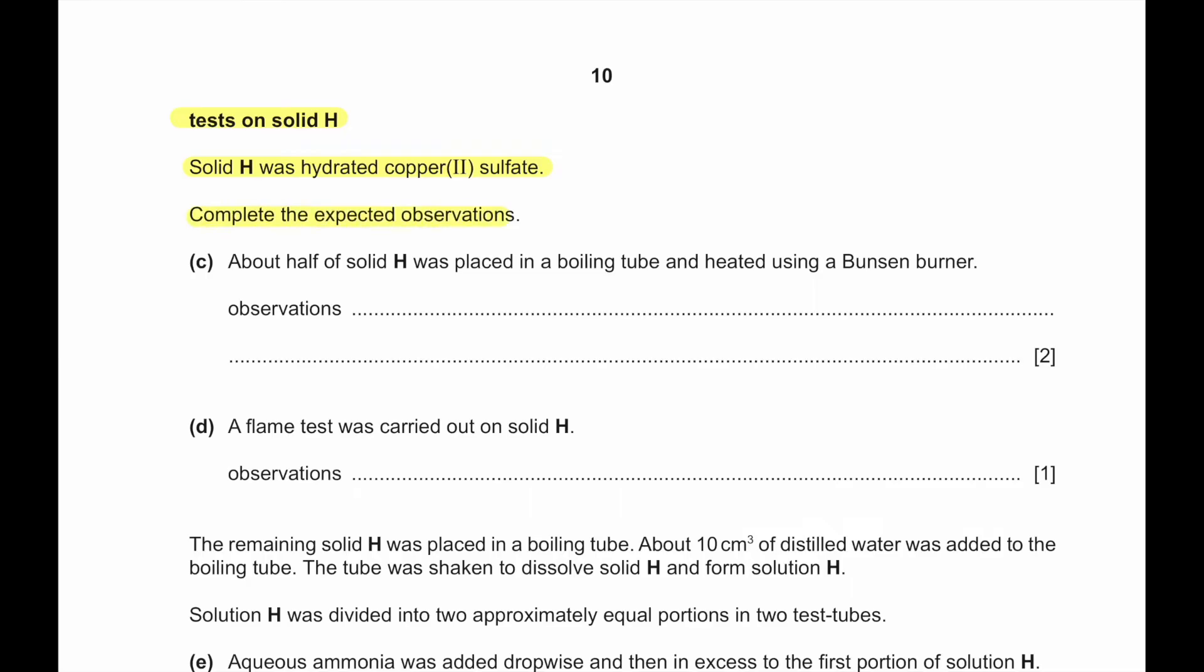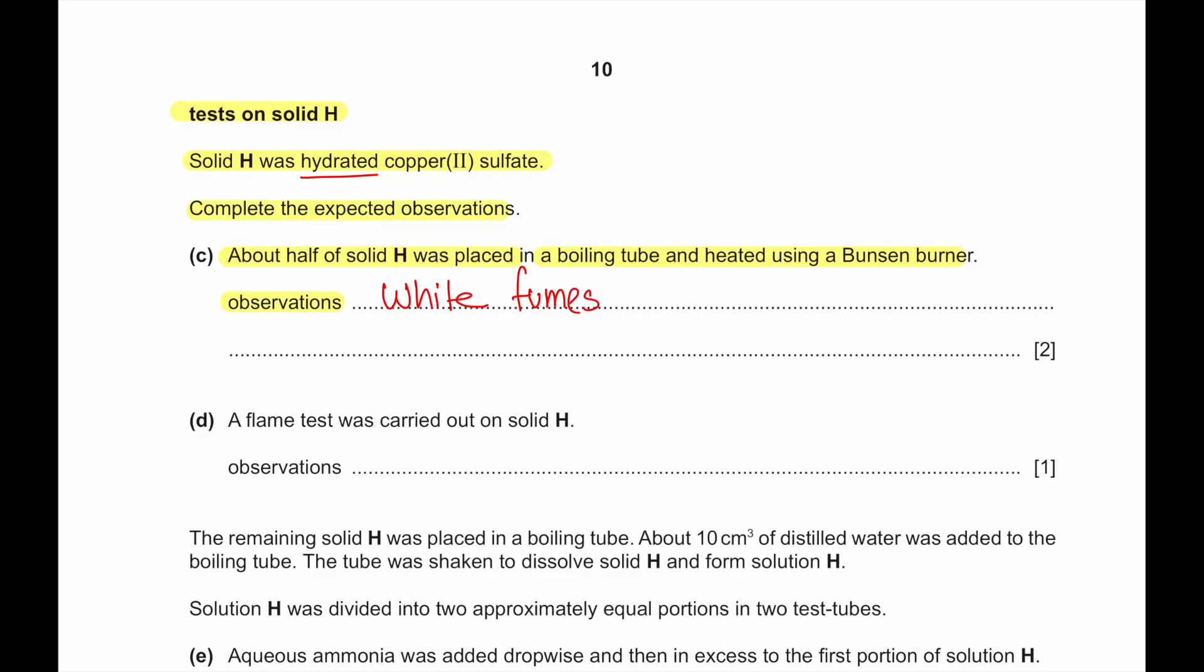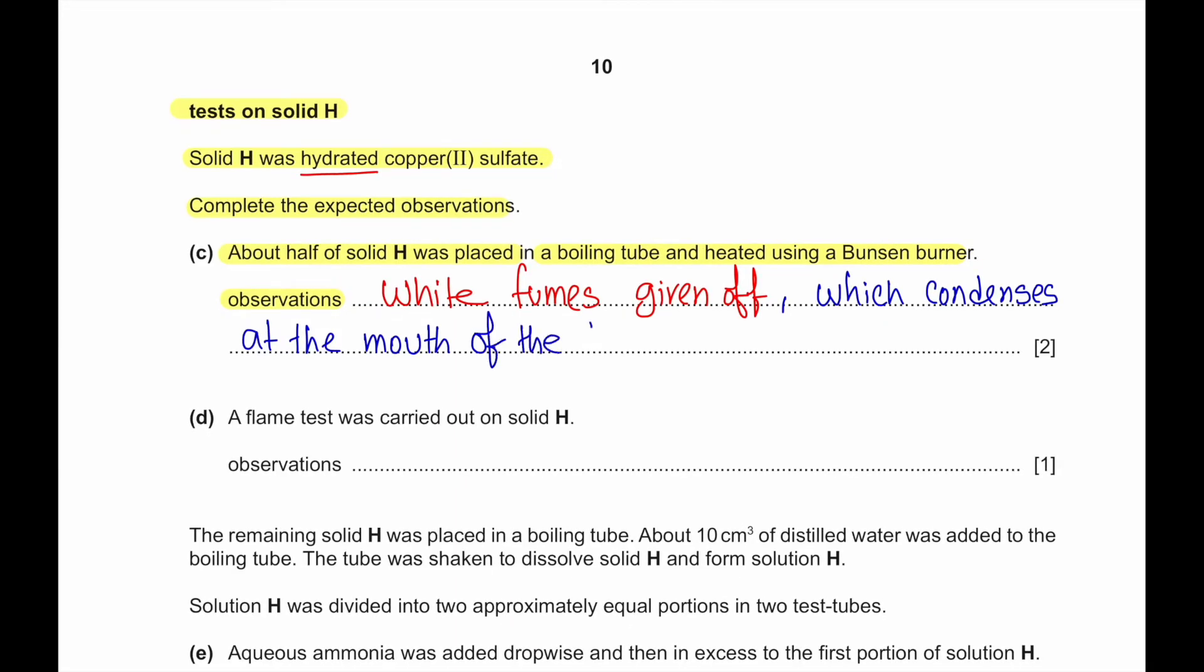Test on solid H. Solid H was hydrated copper to sulfate. Complete the expected observations. About half of solid H was placed in a boiling tube and heated using Bunsen burner. And the observation was, so if we place half of solid H, which is copper sulfate, in a boiling tube and we heat it with a Bunsen burner, then we would see, because it is hydrated, we would see water vapor. So we would see white fumes would be given off, which would condense at the mouth of the tube. And the solid is hydrated copper sulfate and has a colour of blue, it will become white.